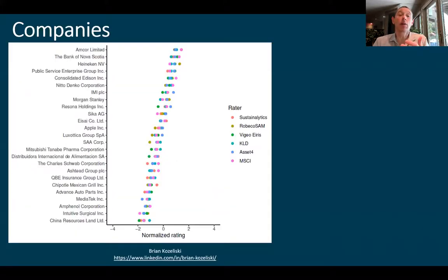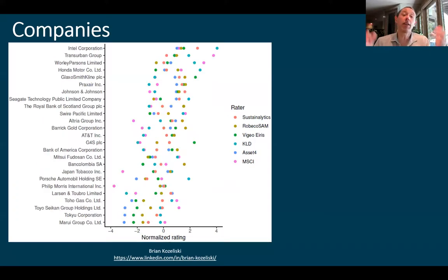Let's now look at particular companies. Here's the good list, right? So these are the companies where they actually do agree pretty well. There's still some dispersion there, but it's not that bad. On the flip side, these are the companies where they don't agree at all.